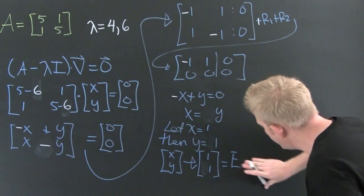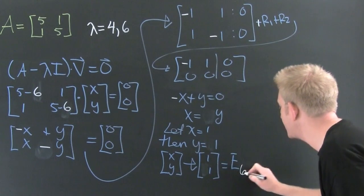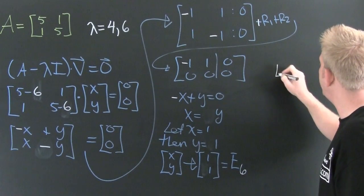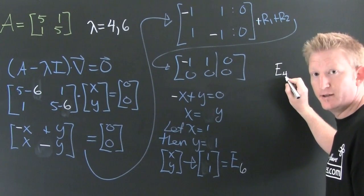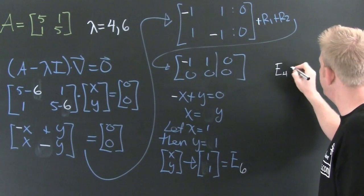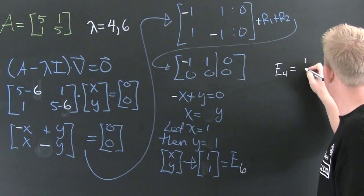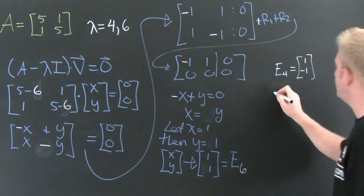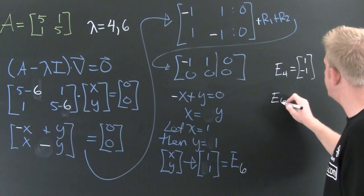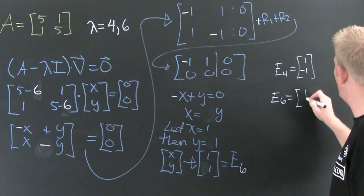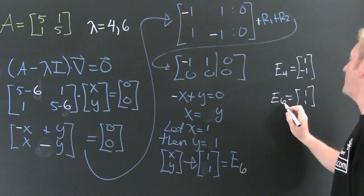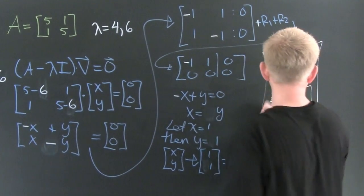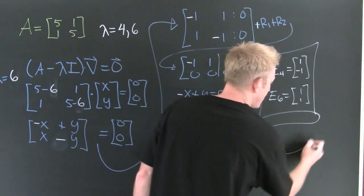I guess we should write it: when eigenvalue is 4, my eigenvector was 1, minus 1. And e6, when my eigenvalue was 6, my eigenvector was 1, 1. And then, a box.